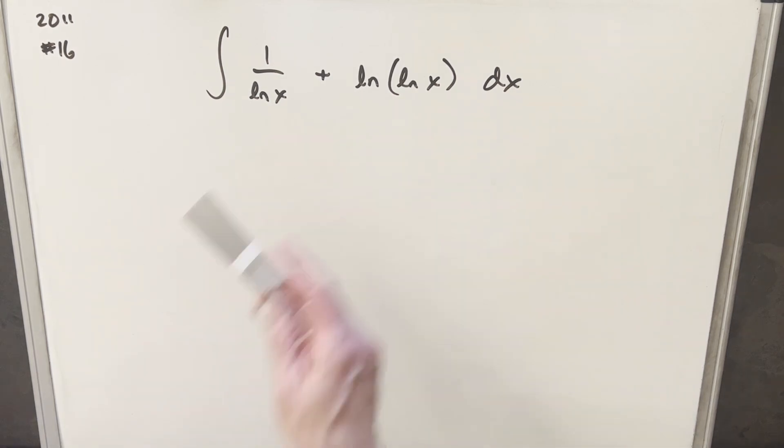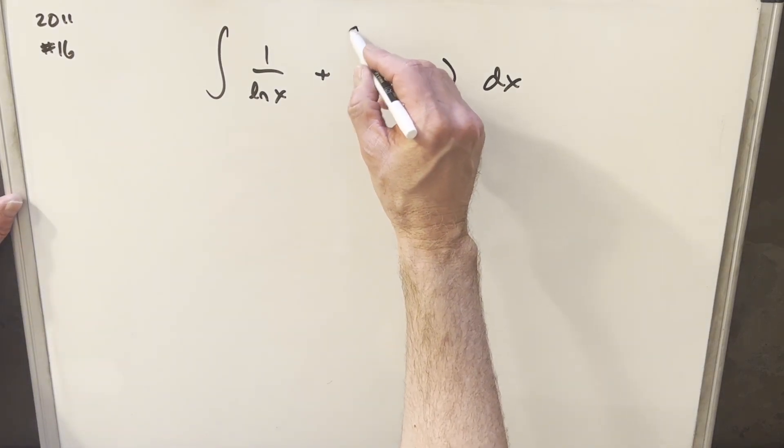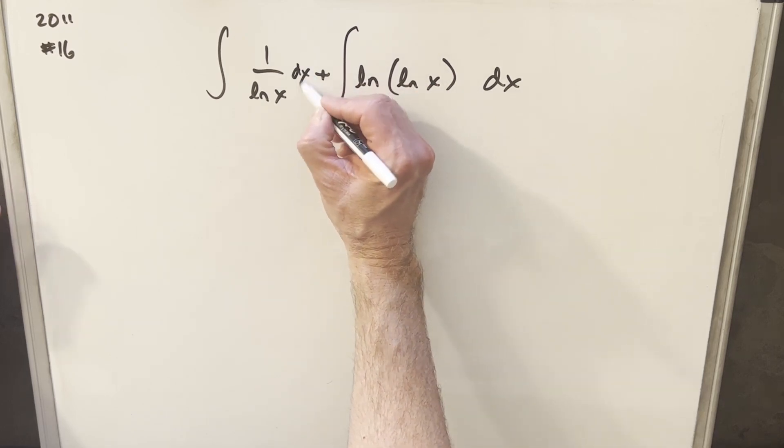The thing to notice here is the fact that we have this plus sign. It makes me think of the reverse product rule, and what I'm going to do is try to tackle this with integration by parts. I'm going to split this into two integrals like this, just create a little dx right there.